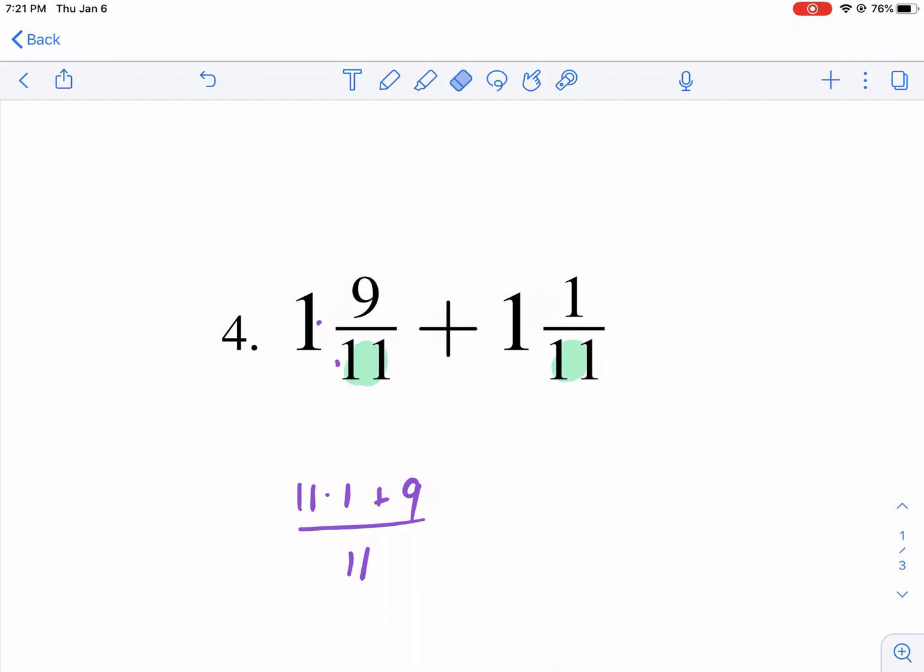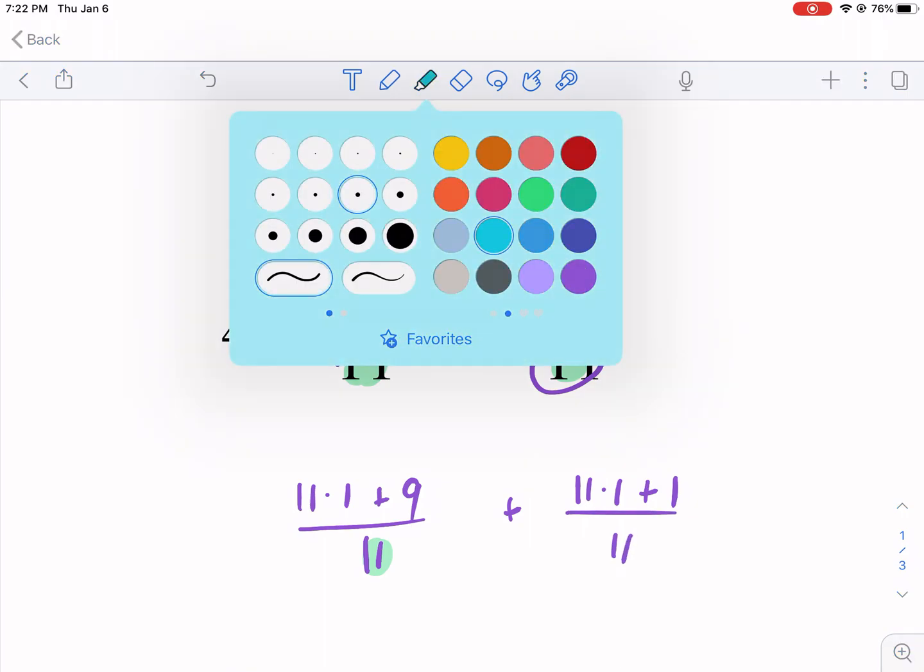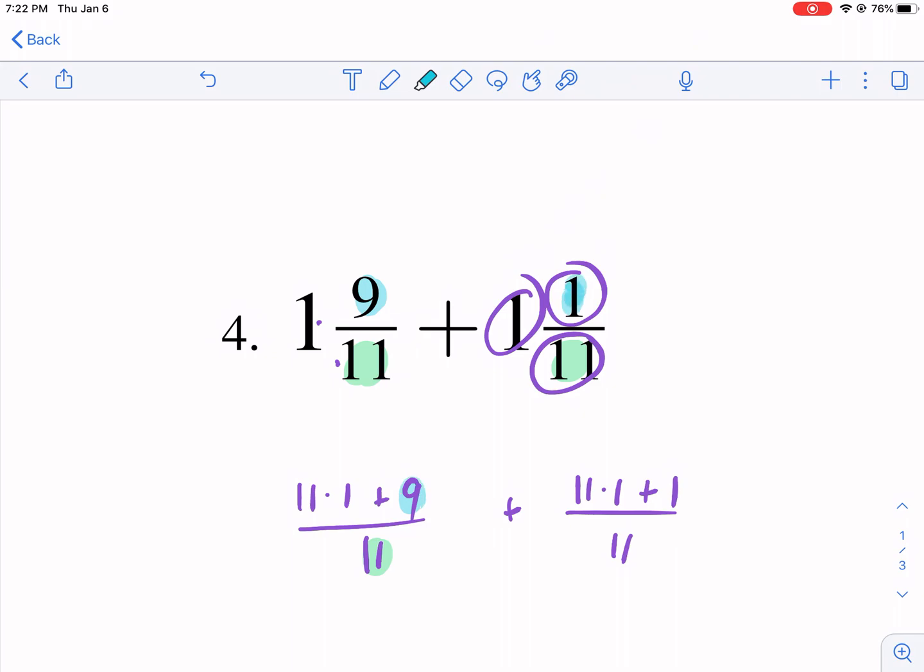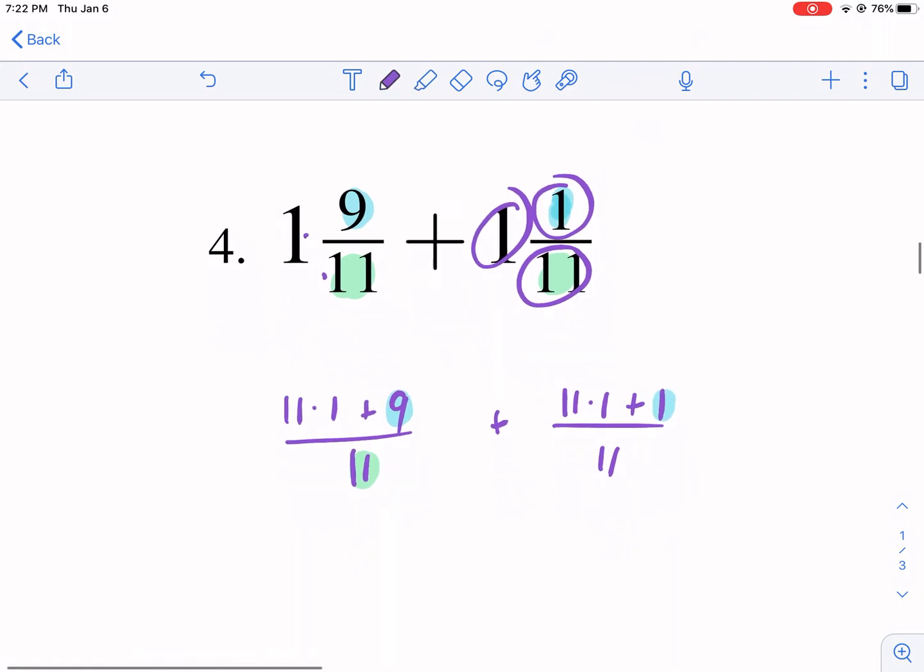So I'm going to highlight this in green, keep the denominator the same. And the same goes for this guy, we're going to do 11 times one, this times the whole number, and then we add the number that's already in the top, that one right there. So just to make it a little bit more clear, we add that number. So what is our final answer here? We're going to have 11 plus nine, that's 20 11ths, plus this is going to be 11 times one is 11 plus one is 12 11ths. Then we get 32 11ths.